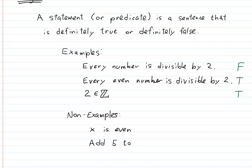'Add five to both sides' — that's a sentence but not a statement. It is even further from being a statement than the previous non-example, because it isn't describing something trying to be a fact — it's describing an action. In mathematics and logic, a statement must be something that is true or false. This sentence is neither, so it's not a statement.